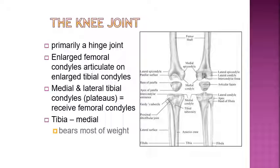The knee joint is primarily a hinge joint — more precisely, a modified hinge joint, because it can also produce rotation. The primary motions are flexion and extension, but when the knee is flexed, it has the ability to internally and externally rotate. You have enlarged femoral condyles articulating on enlarged tibial condyles, with the medial and lateral tibial plateaus receiving those condyles. The tibia is the large medial bone that bears most of the weight. The fibula, the smaller lateral bone of the lower leg, bears very little weight — the tibia is the primary weight-bearing bone.